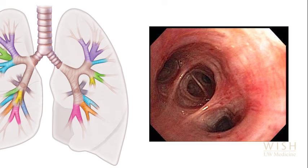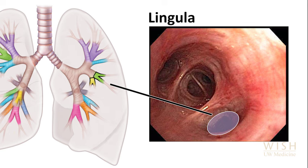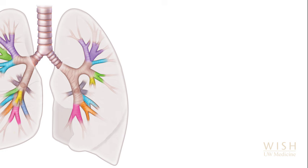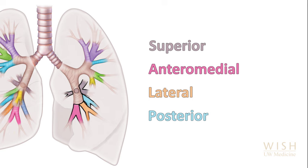Now for a quick anatomy reminder. The left lung has two lobes. The upper lobe divides into anterior, apico-posterior, and lingular segments. The lingula has inferior and superior segments. The left lower lobe divides into the superior, anteromedial, lateral, and posterior segments.